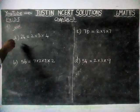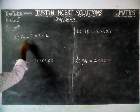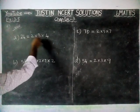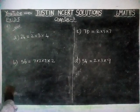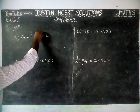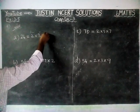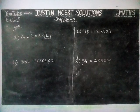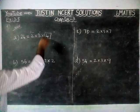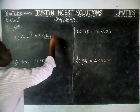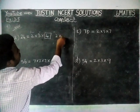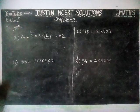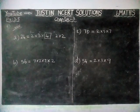Option A: 24 = 2 × 3 × 4. Here, 2 is a prime number, 3 is a prime number, but 4 is not a prime number. We can separate 4 into 2 × 2, therefore this is not prime factorization.